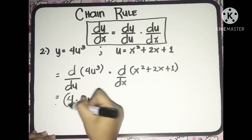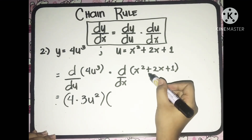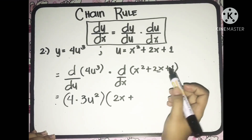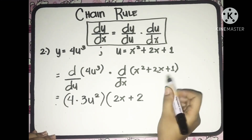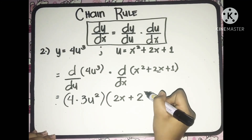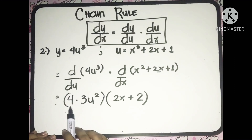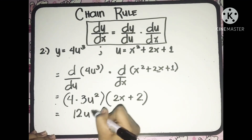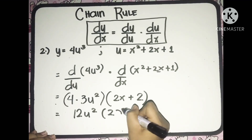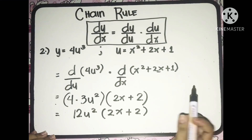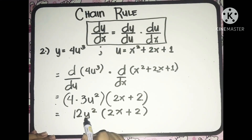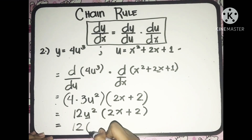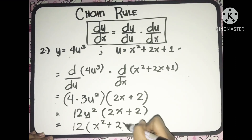Then multiplied to the derivative of x squared plus 2x plus 1, which will be equal to 2x plus the derivative of the second term 2x, which is equal to 2. The derivative of the constant is 0, so we don't need to write that. Then let's multiply 4 and 3u squared, so we'll have 12u squared multiplied to 2x plus 2. And the last thing we're going to do in chain rule is to substitute the value of u, which is equal to x squared plus 2x plus 1. So we'll have 12 multiplied to x squared plus 2x plus 1 squared.